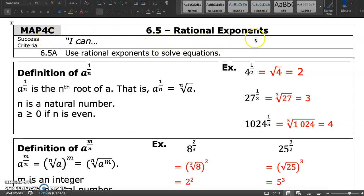MAP4C 6.5 Rational Exponents. A rational exponent is defined as an exponent that has a fraction.